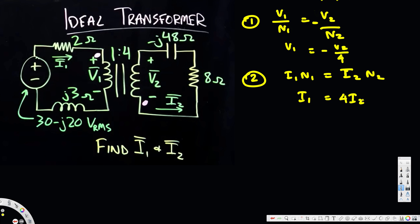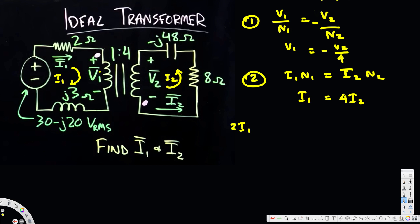To find i1 and i2, we apply Kirchhoff's Voltage Law to the two loops. Assuming current i1 flows clockwise in the first loop, the KVL equation is: 2·i1 + v1 + j3·i1 = 30 − j20 V rms. The voltage drops across the 2Ω resistor, the transformer primary v1, and the j3 impedance sum to the source voltage.